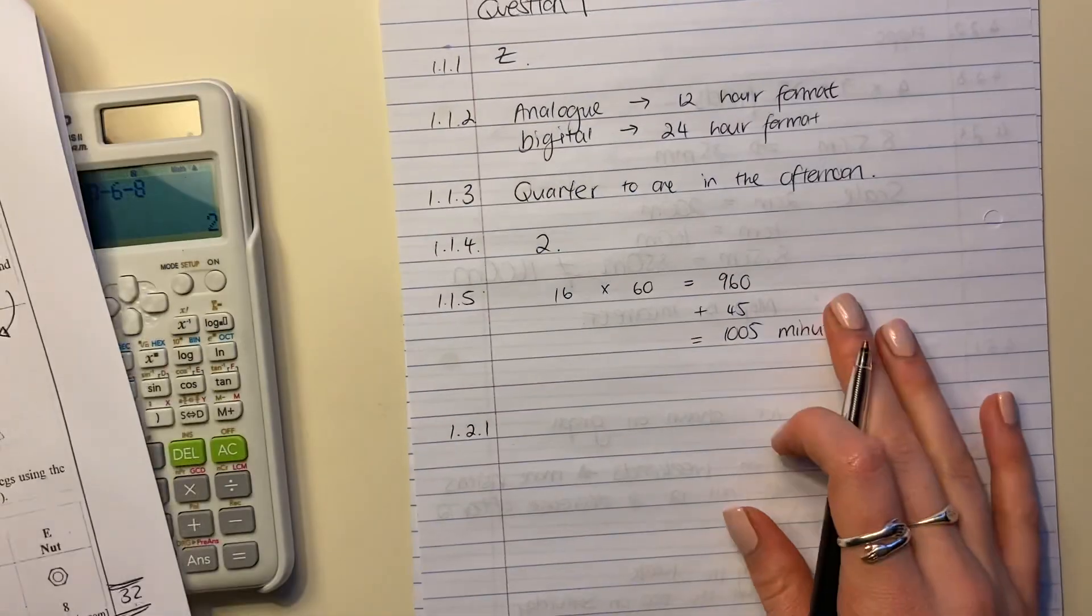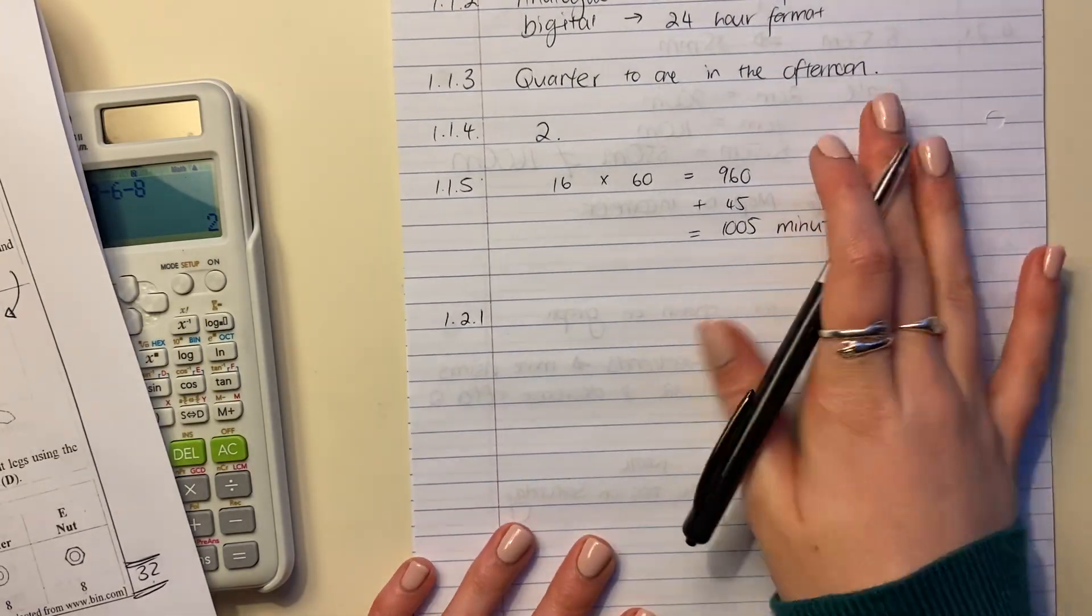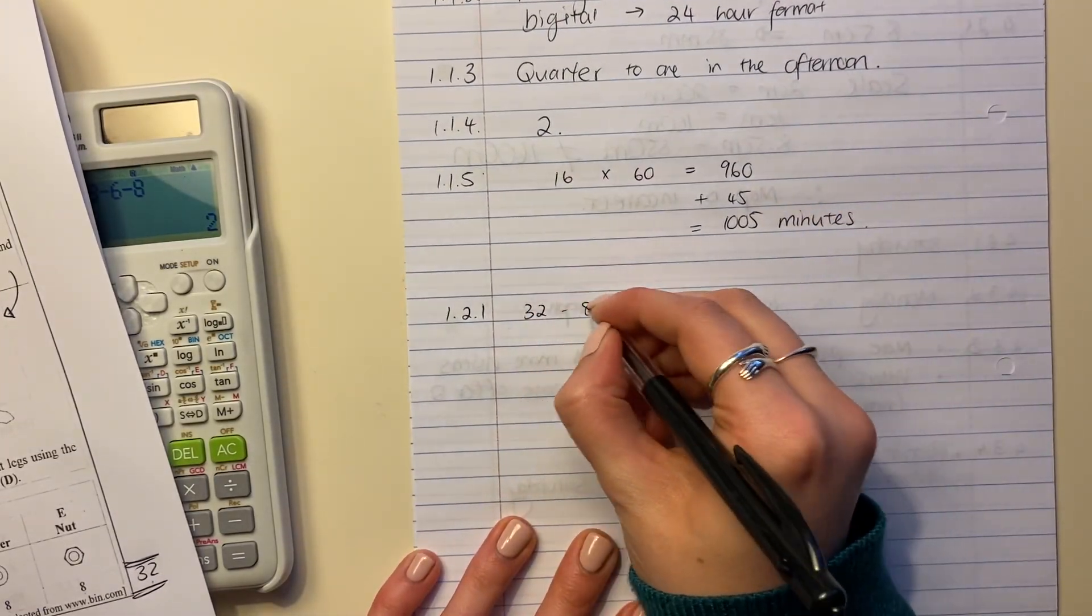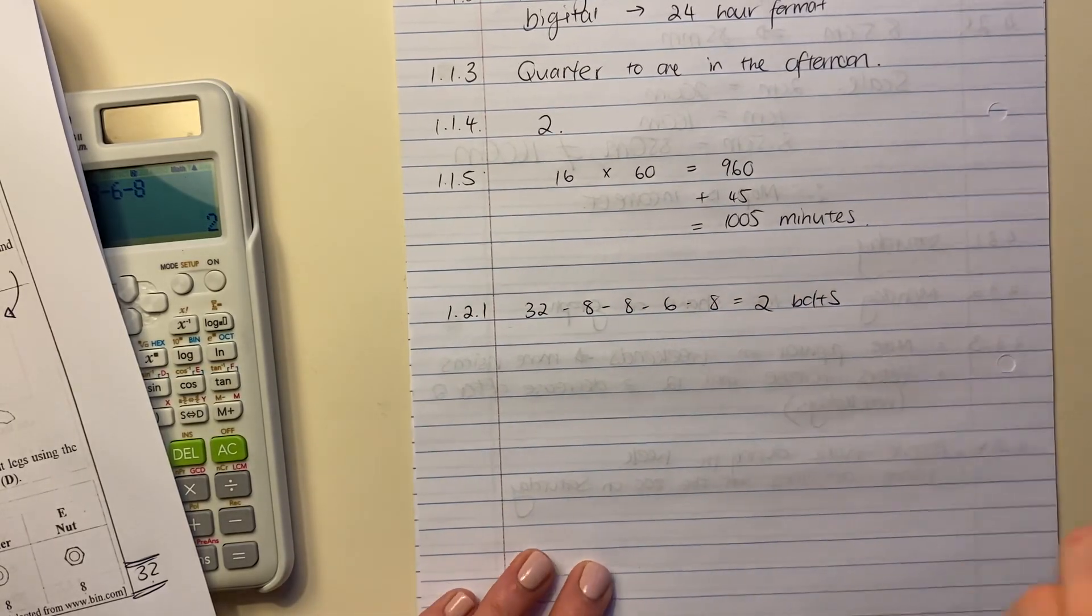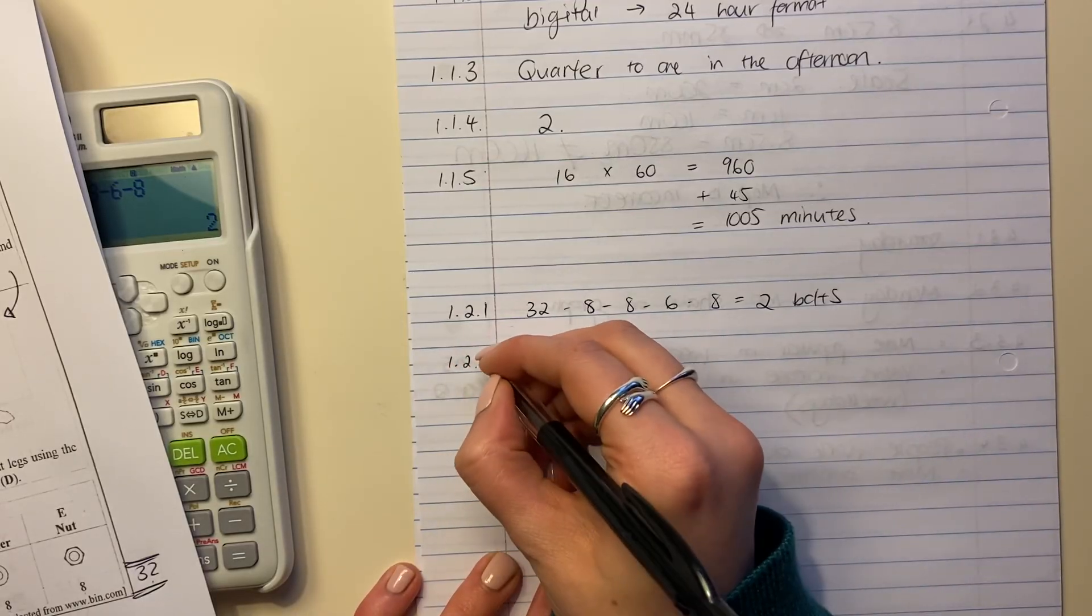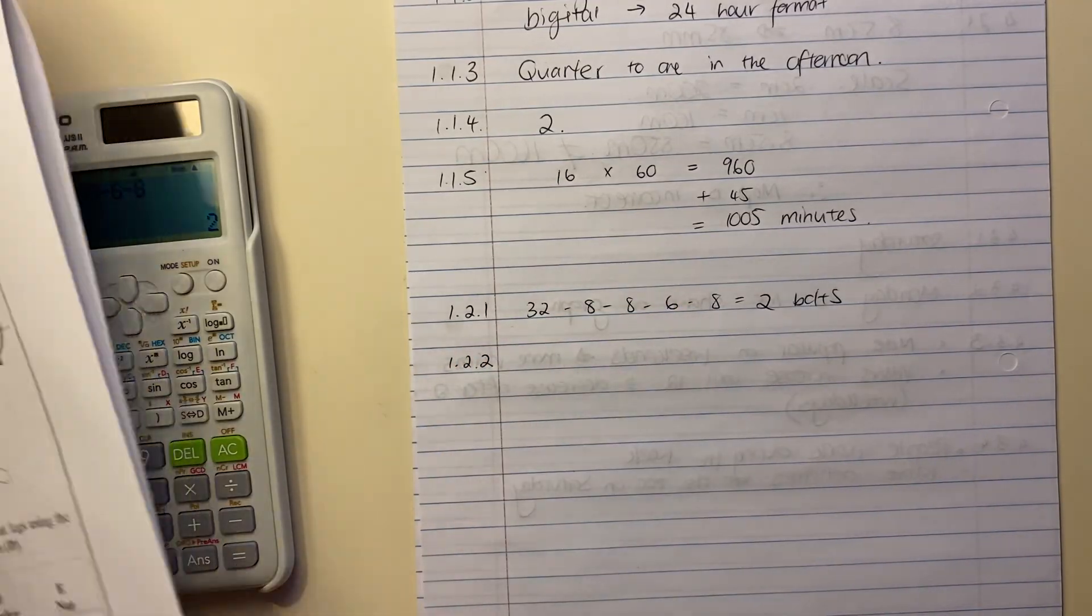Okay, so that's the kind of logic I want you to start being comfortable using. So we're going to say 32 minus 8 minus 8 minus 6 minus 8 equals 2 bolts. That's the kind of logic you need to be using and that's the kind of information you need to be extracting.